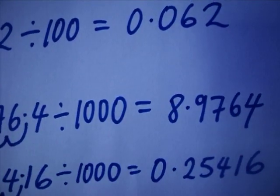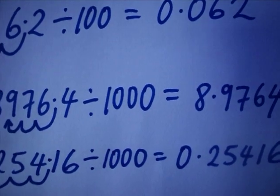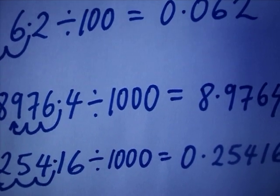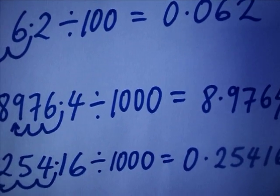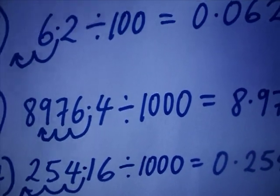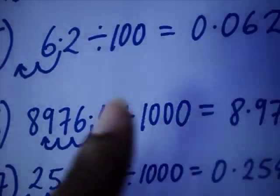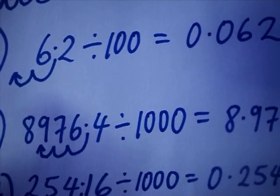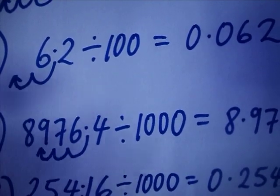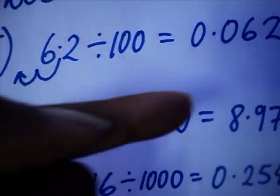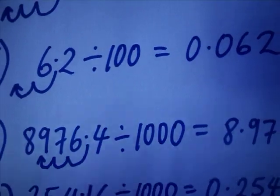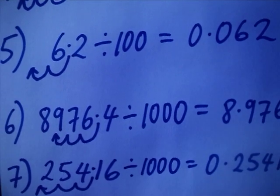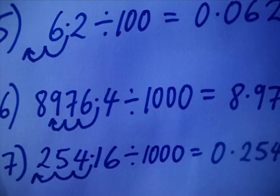This is a shortcut. When multiplying or dividing by multiples of 10, you simply shift the point. If you are dividing by multiples of 10, you shift the point to the left. If you are multiplying, you shift the point to the right. Remember that — this is the shortcut method when you are multiplying or dividing by multiples of 10.